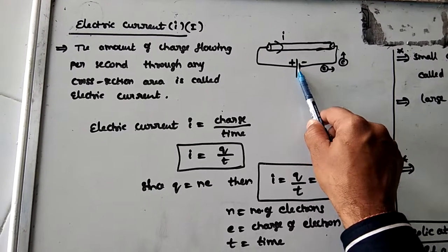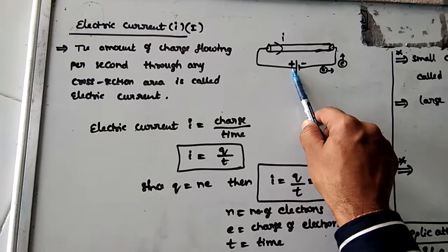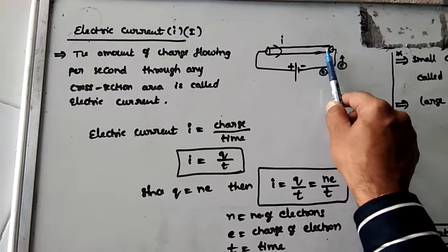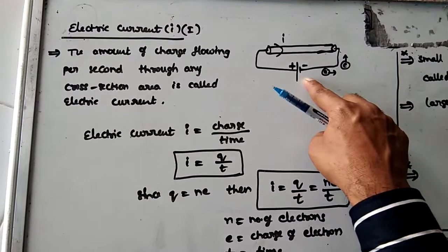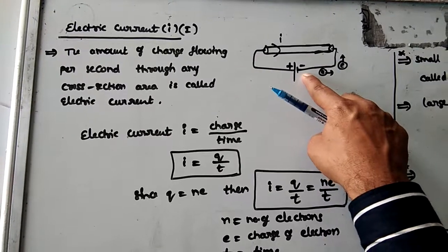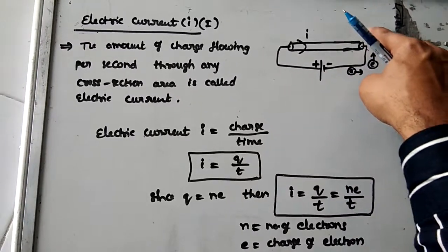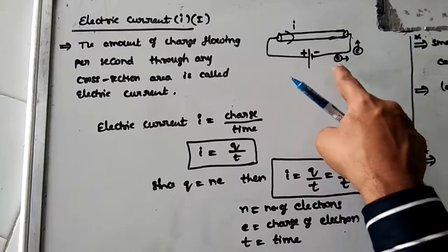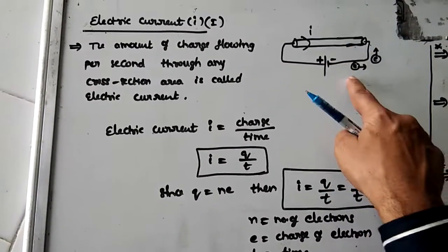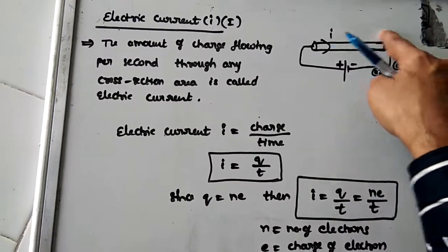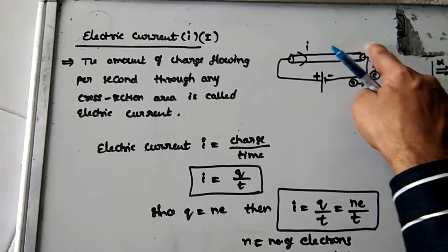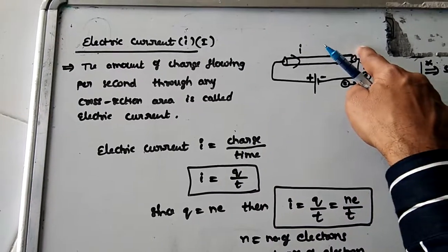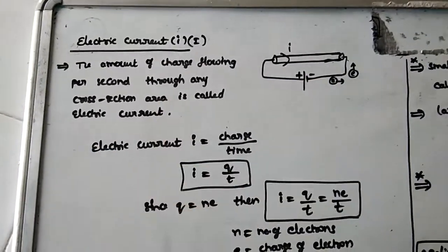Initially there is a gap, so electrons are not able to move. Once the wire connection is made, electrons — which are in greater number on one side — start moving toward the place with fewer electrons. This flow of electrons begins, and whenever charge is moving, current flows.